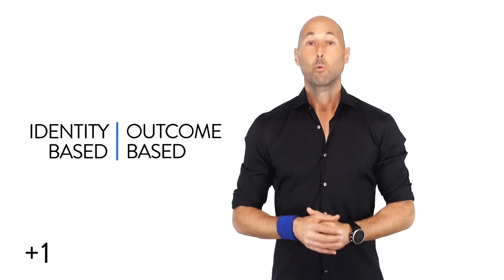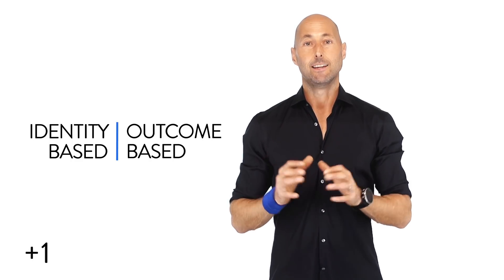He calls one outcome-based and the other identity-based. Long story short, we want to start with our identity. Rather than start with thinking about what we want to achieve and how we're going to get there, James tells us that we want to start by thinking about who we are committed to becoming. That's the engine that drives the creation of the best habits and the destruction of the worst.